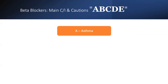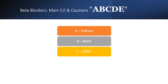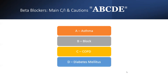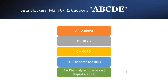For beta blocker main contraindications and cautions, use the mnemonic ABCDE: A for asthma, B for heart block, C for COPD, D for diabetes mellitus, and E for electrolyte imbalance — specifically hyperkalemia.